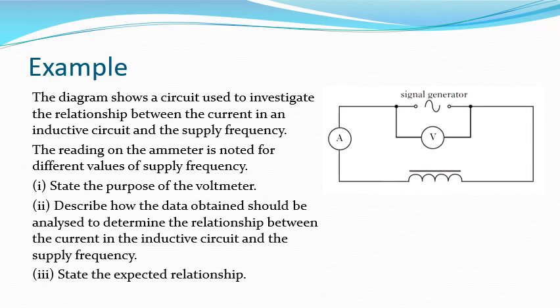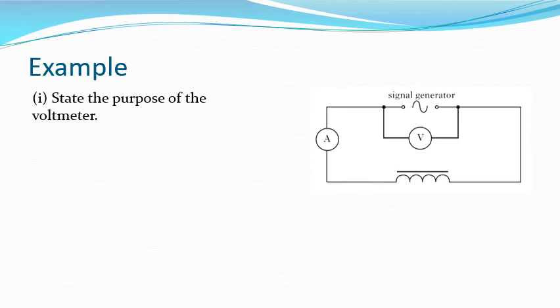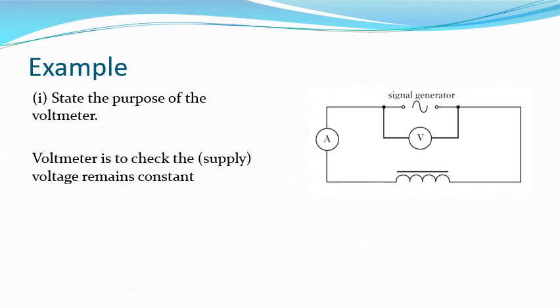There are three questions: what's the purpose of the voltmeter; describe the data obtained and how to analyse it to determine the relationship; and state the expected relationship. The purpose of the voltmeter is to ensure that the output from the signal generator remains constant. As we change the frequency, we expect the ammeter readings to change — higher frequency means more reactance and less current. The voltmeter checks that any change in current is not simply due to a change in the voltage output.